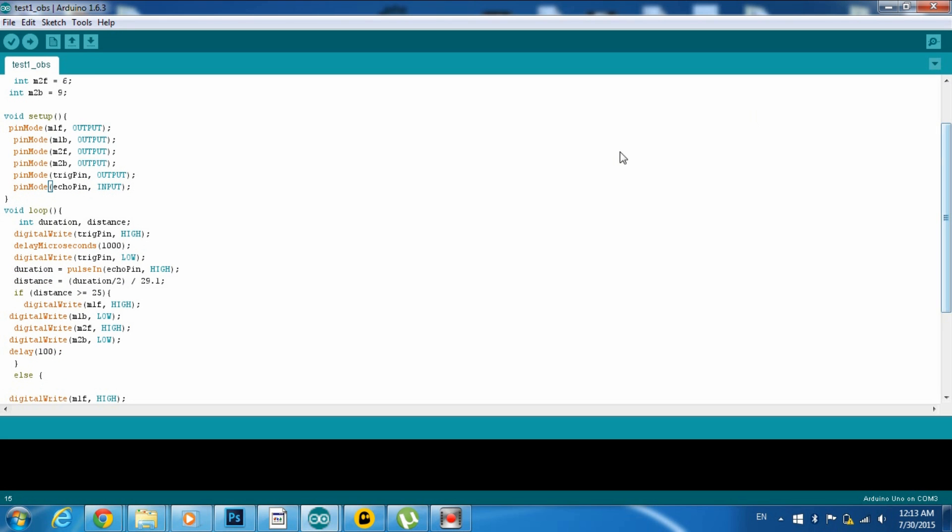In the loop, first of all, I am initiating two constants, duration and distance. Duration is the time needed for the wave to reach the object and come back, and distance is the distance we will calculate. First of all, I set the trigger pin high for just one second to send an ultrasonic pulse, and then we calculate the time needed for the echo pin to go high. This is basically set as duration, and to obtain the distance, we divide half the duration, which is the duration for the wave to reach the object without coming back, and we divide that by the speed of sound in the air.